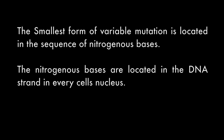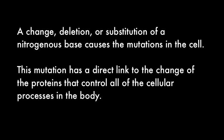Mutations. The smallest form of variable mutation is located in the sequence of nitrogenous bases, which are located in the DNA strand in every cell nucleus. A change, deletion, or substitution of a nitrogenous base causes mutations in the cell. This mutation has a direct link to the change of the proteins that control all of the cellular processes in the body.